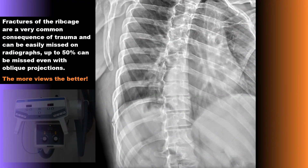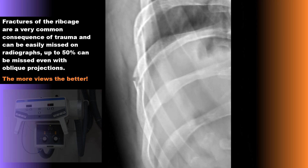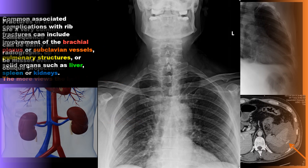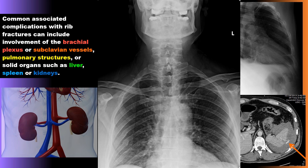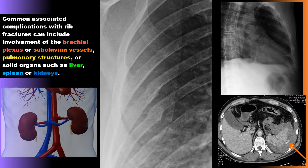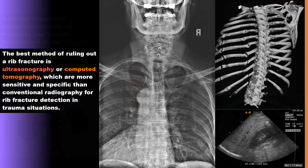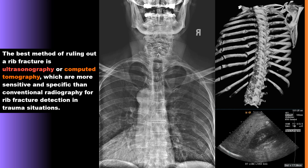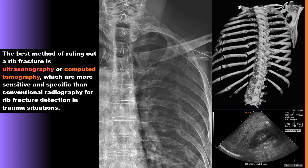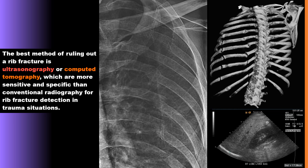Fractures of the rib cage are a very common consequence of trauma and can be easily missed on radiographs — up to 50% can be missed even with oblique projections. The more views of the ribs the better; multiple oblique projections are preferred. Common complications include involvement of the brachial plexus or subclavian vessels, pulmonary structures, or solid organs such as the liver, spleen, or kidneys. The best method of ruling out a rib fracture is ultrasonography or computed tomography, as these are more sensitive and specific than conventional radiography in trauma situations.